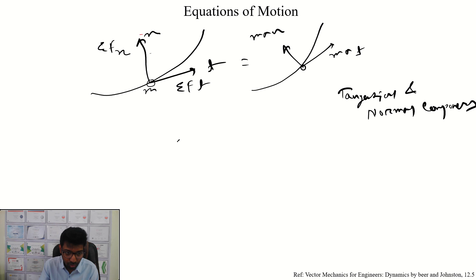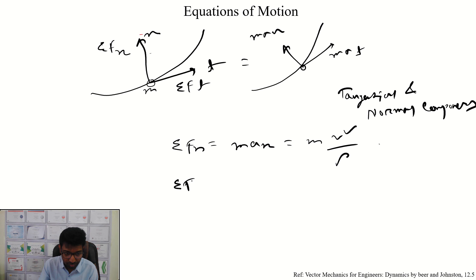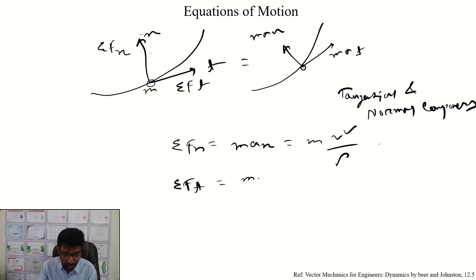The summation of Fn equals m·an, and an equals v-squared divided by rho. In the same way, the summation of Ft equals m·at, where at equals dV divided by dt. So these are the tangential and normal components of the equation of motion.